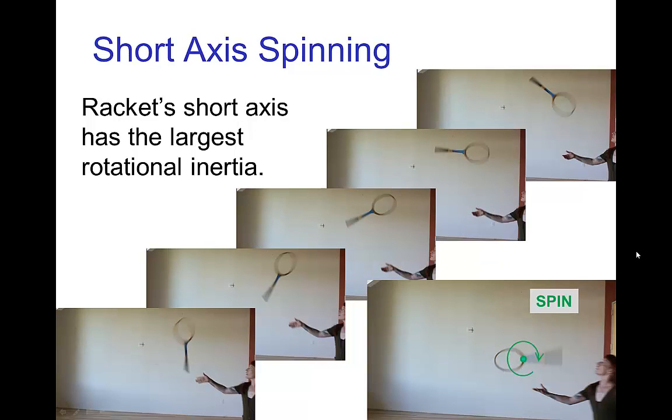Now, the short axis is when we have the racket flat and it's turning around that axis as you see here. It's rather similar to the kind of turning motion that we just saw with the hammer.